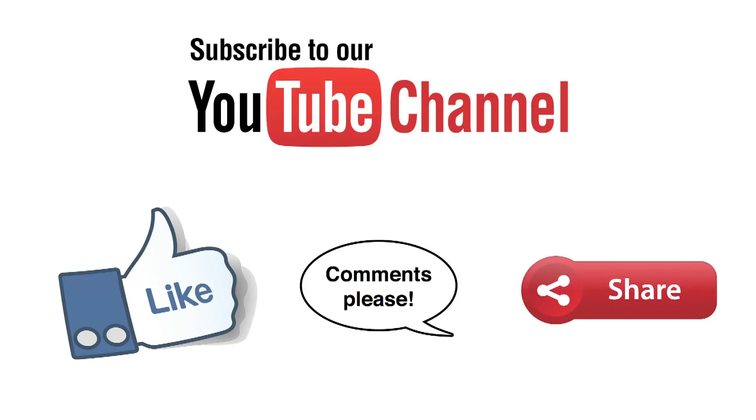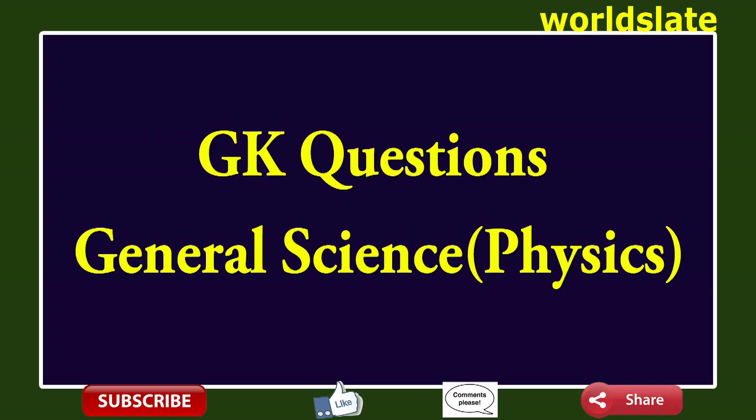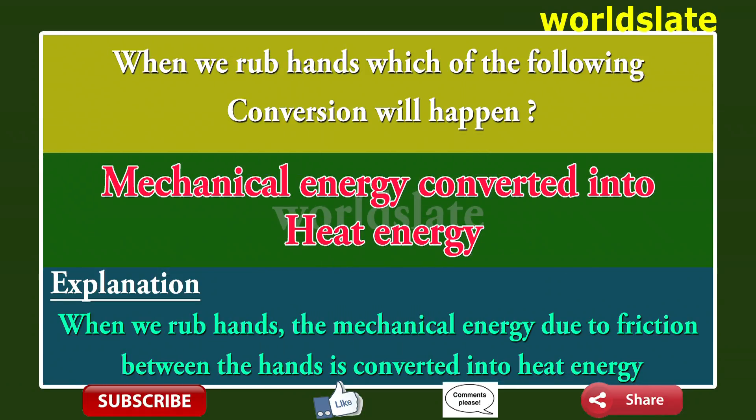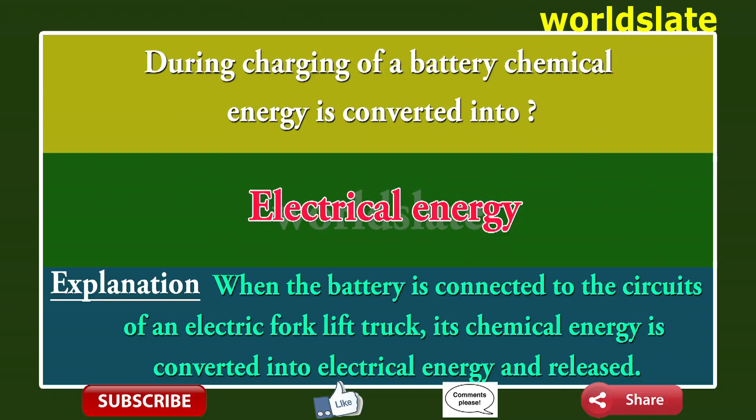GK questions, general science, physics. Question: When we rub hands, which of the following energy conversion will happen? Answer: Mechanical energy is converted into heat energy. Explanation: When we rub hands, the mechanical energy due to friction between the hands is converted into heat energy.